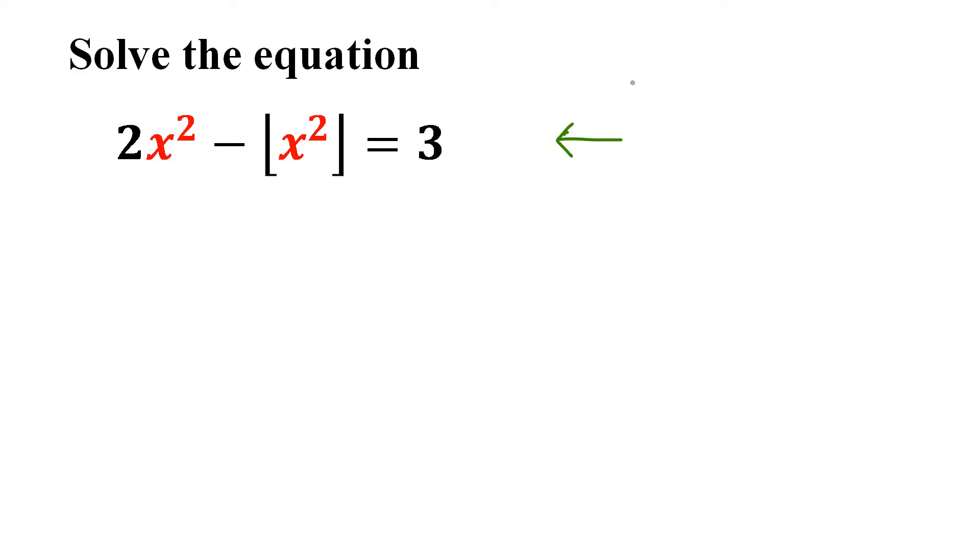2x squared minus floor of x squared equals 3.